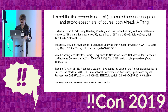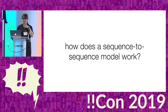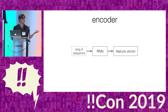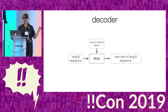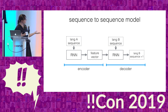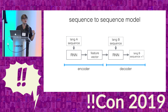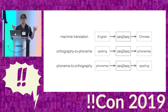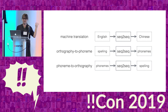I think there are a couple of things about my model architecture and my applications that are interesting. Here's very briefly how a sequence-to-sequence model works: you have an encoder that takes a sequence in language A and converts it to a fixed-length feature vector. Then you have a decoder, which takes a sequence in language B and predicts the next item in the sequence using that feature vector from language A to condition the process. Combining the two, you get a sequence-to-sequence model where you input paired sequences in language A and language B and get back language B with one more word in the sequence. This is usually used for machine translation — you put in English and Chinese sentence pairs and get out a system that appears to translate between them. What I'm doing is saying language A is spelling and language B is phonemes, or vice versa.